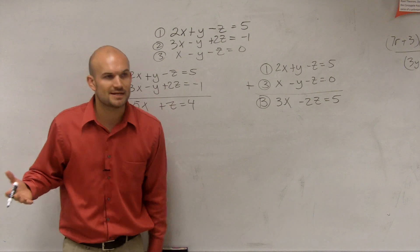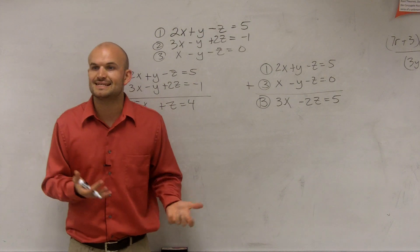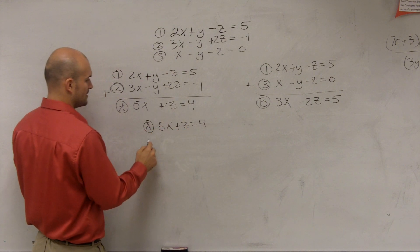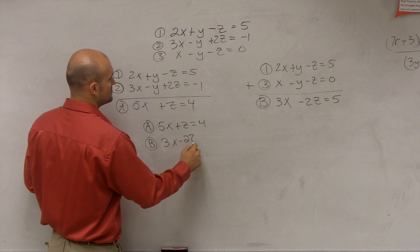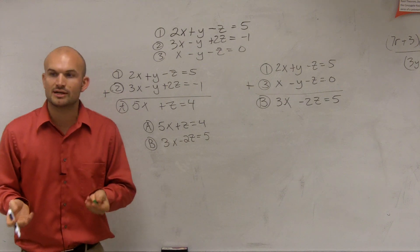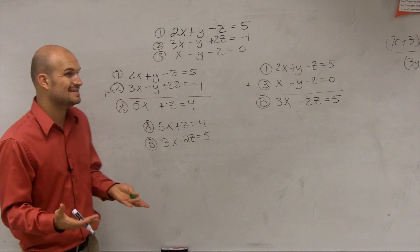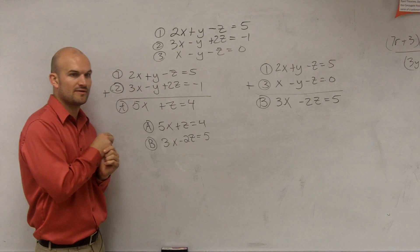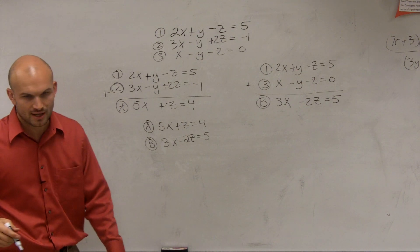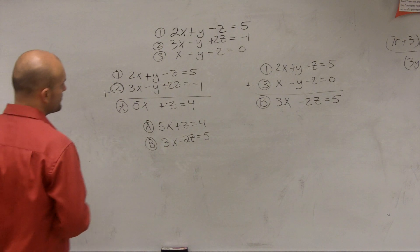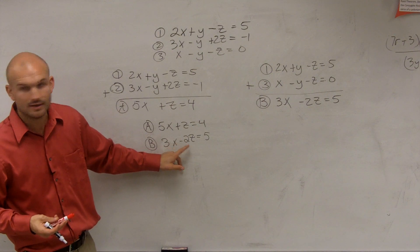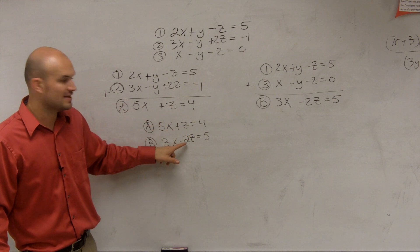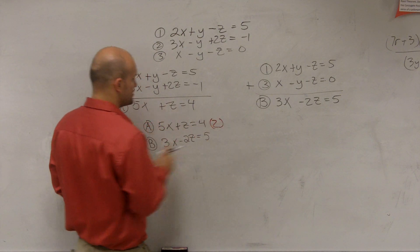Now you can solve two equations with two variables, either by elimination or substitution — whichever is easiest. I'll use elimination. So equation A is 5x plus z equals 4, and equation B is 3x minus 2z equals 5. On the elimination technique, we want to either add or subtract equations. I don't have the same coefficients for either variable, so I need to multiply by a multiplier. If I multiply the top equation by 2, the coefficient of z becomes 2, and I already have negative 2z in equation B — that's exactly what I want.